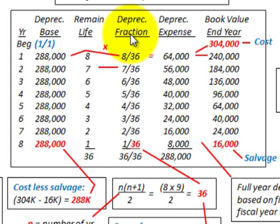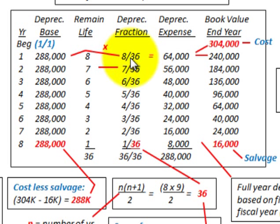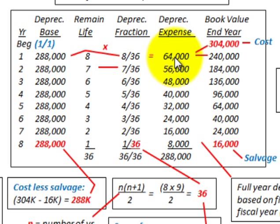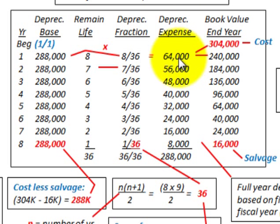The depreciation fraction is multiplied times the base. For year 1, we had 8 years of remaining life, so we take 8 divided by 36 — the sum of the years — and multiply that fractional amount by the depreciation base of $288,000. That gives us a depreciation expense at the end of year 1 of $64,000. Starting with our cost of $304,000 and subtracting $64,000 gives us a book value at the end of year 1 of $240,000.